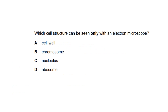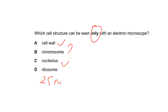Question: which cell structure can be seen only with an electron microscope? The cell wall and nucleus can be seen with a light microscope. Chromosomes become visible during cell division, so they can be observed with a light microscope too. Ribosomes are about 25 nanometers in size — too small for a light microscope — so only the electron microscope works.